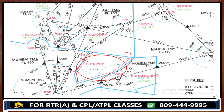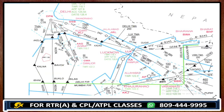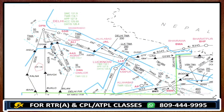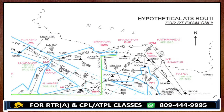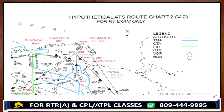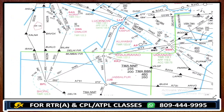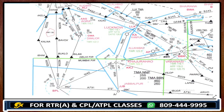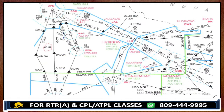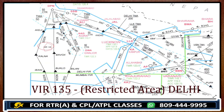Now we can have a look at chart number two. This is the restricted area of Delhi number 135.